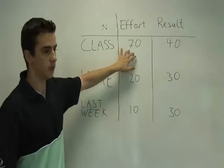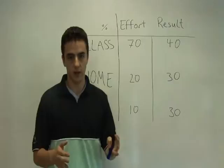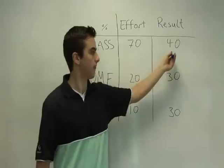Now, what I mean by this is, in your class, going to class and everything, that's 70% of the effort because it takes the most amount of time—you have to get ready and all that sort of thing. But it only gives you 40% of the results. So if you just went to class, then you'd normally expect 40% of the results.